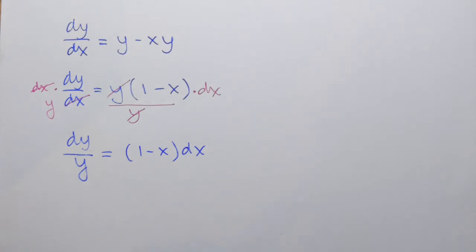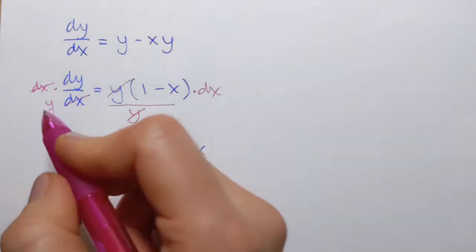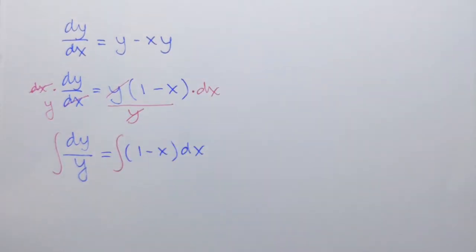We've separated variables and that means that we're ready to integrate each side. So we're going to integrate the left-hand side and the right-hand side. I can see that integration will be easy here, so I'll just continue.